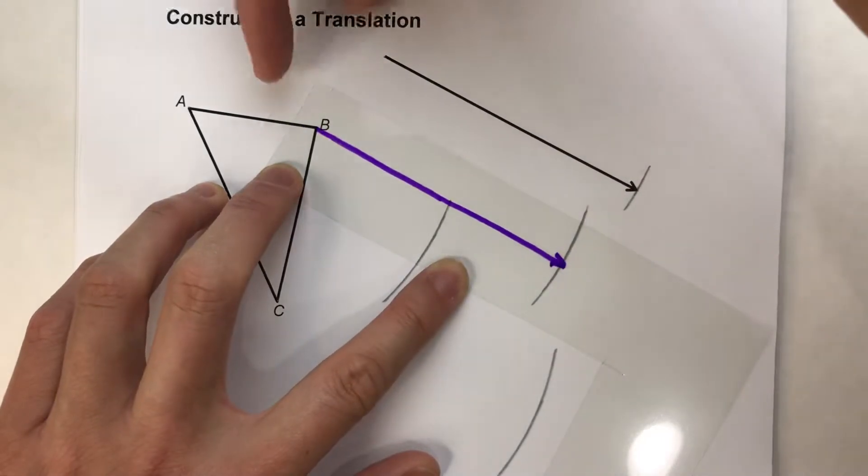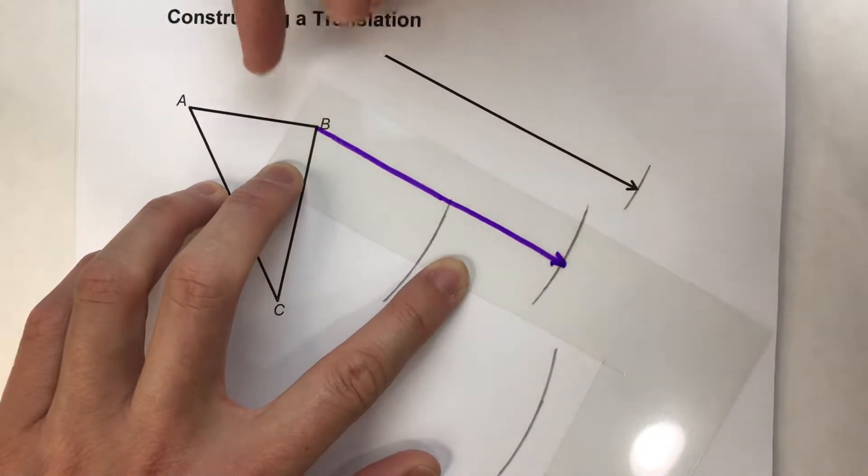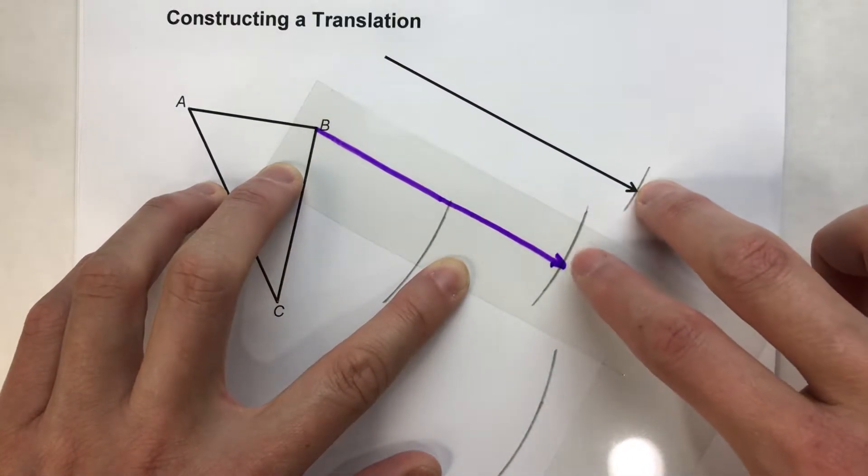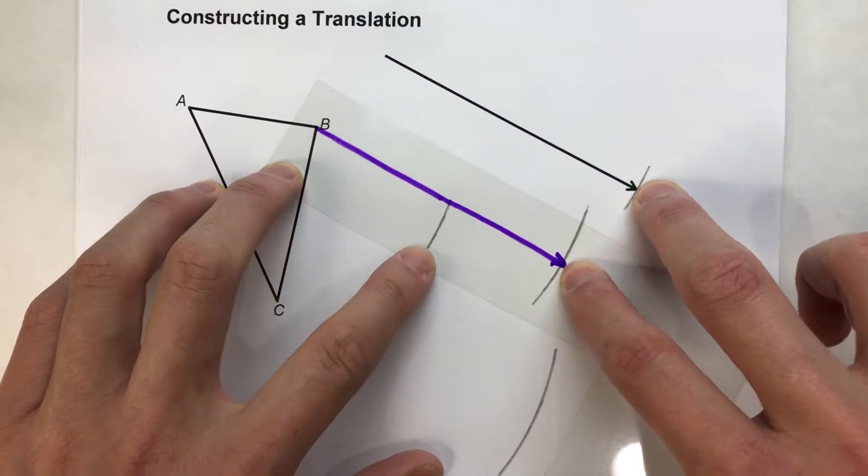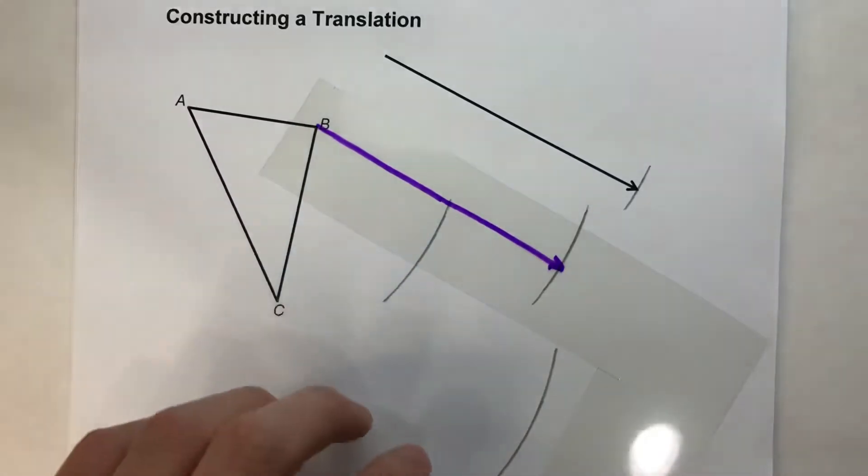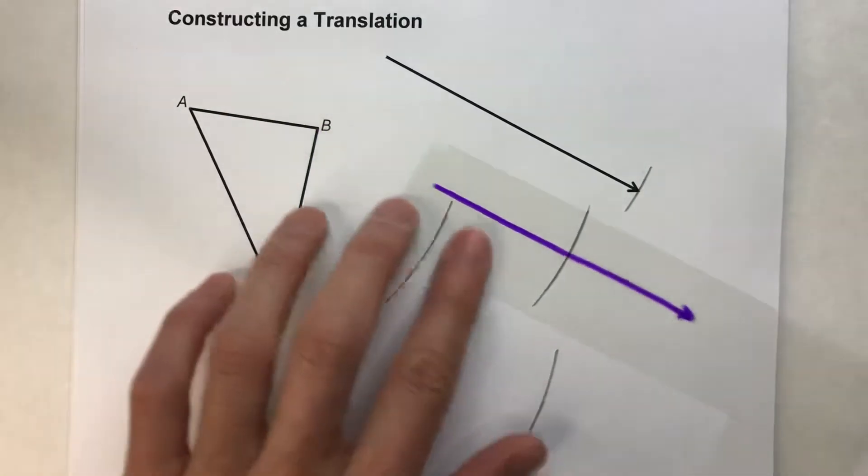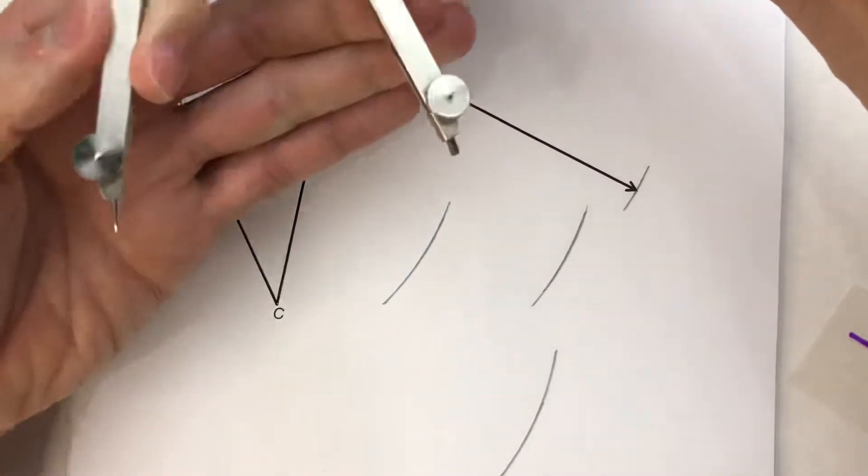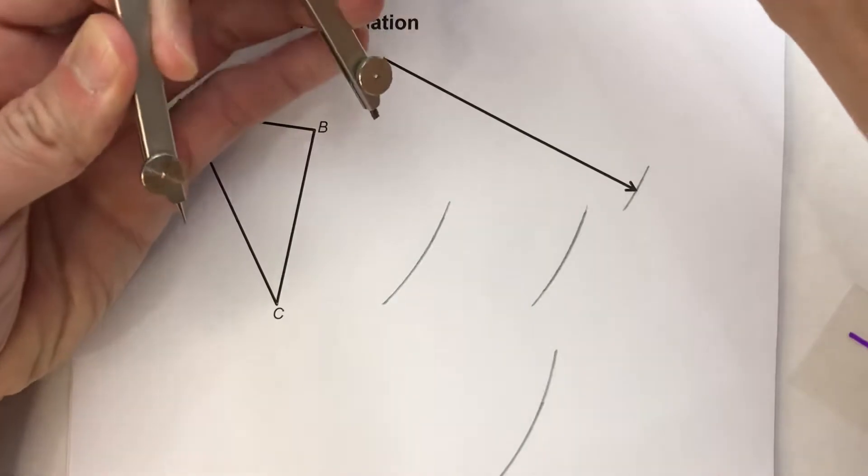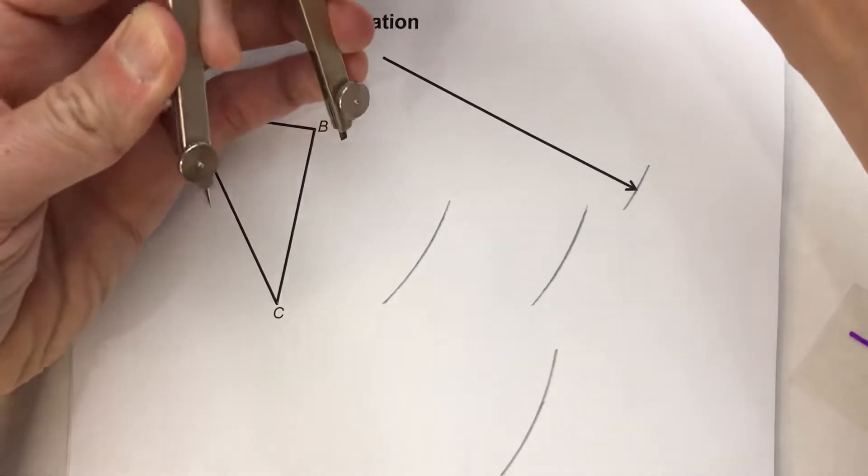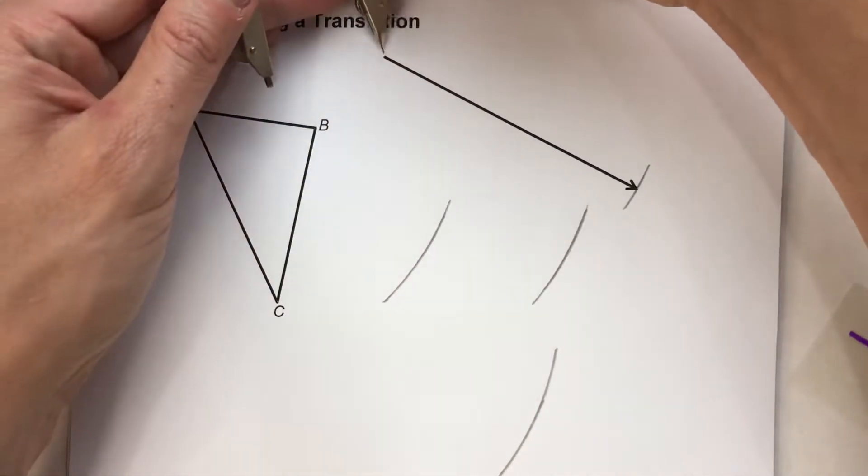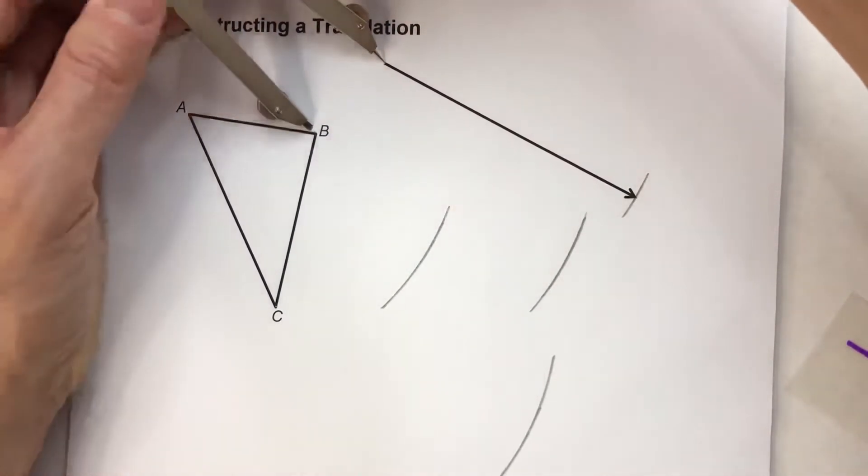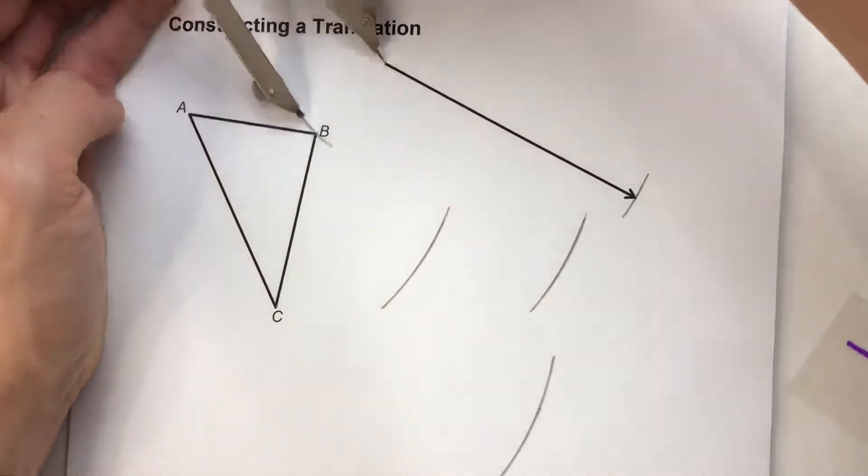And so if we take the distance from the end of the vector to B, that will be the same distance as the other end of the vector to B prime. So that's going to be my next step to find where B prime is. So I'm going to take my compass. I'm going to have that setting to the end of the vector and point B. So here's the end of the vector. Point B is right there. So I got my setting. There it is right there.